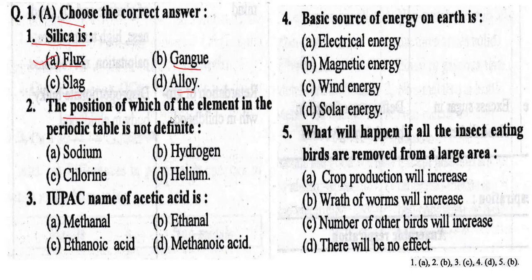Question No. 2. The position of which element in the periodic table is not definite? Option A: Sodium. Option B: Hydrogen. Option C: Chlorine. Option D: Helium. The correct option is Option B, Hydrogen.